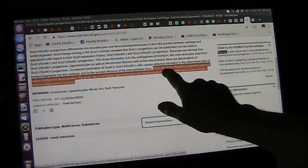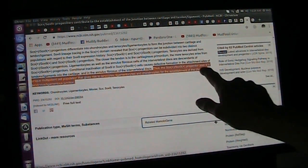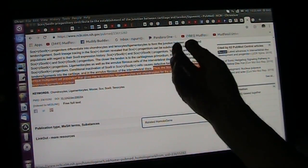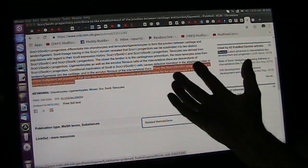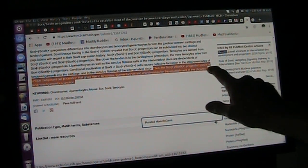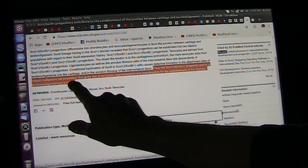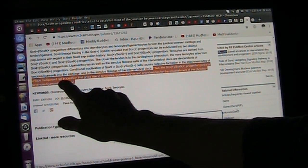It says, thus, the SCX plus and SOX9 plus progenitor pool, which the progenitor is the tenocytes that create these little tendon enthesis points, is a unique multipotent cell population.